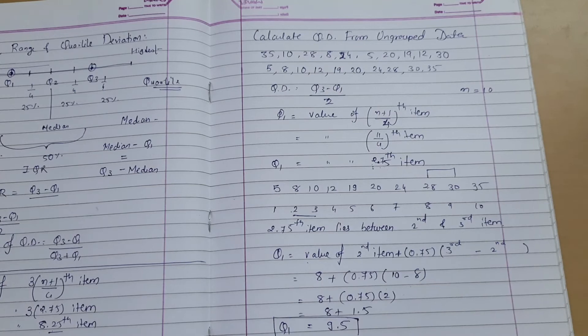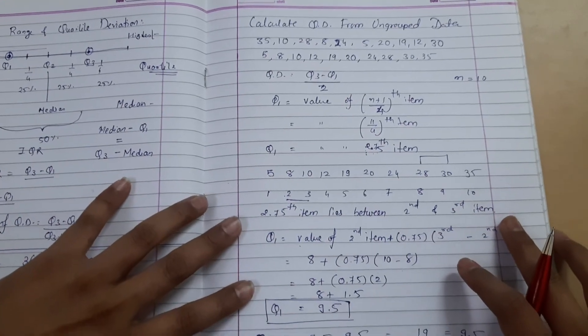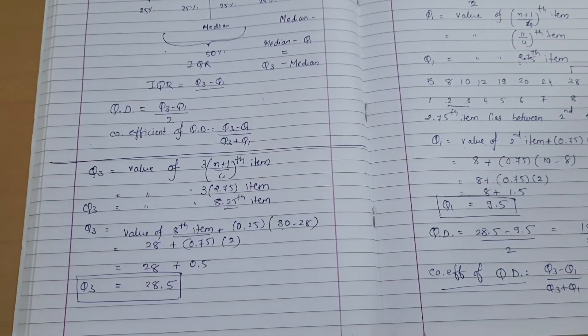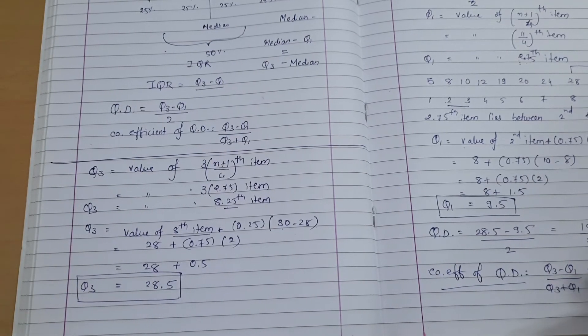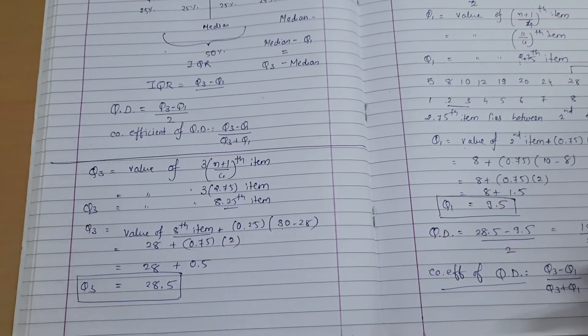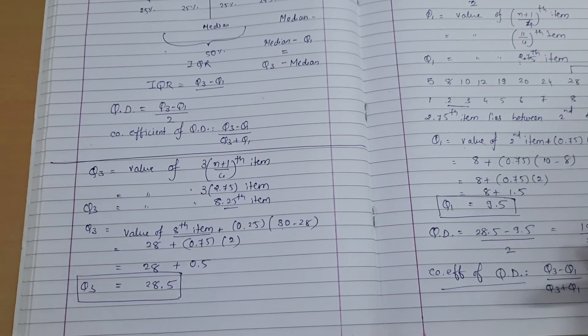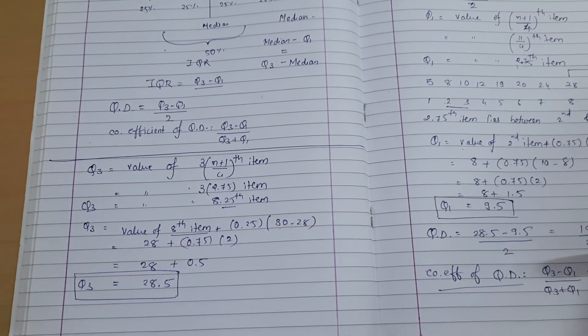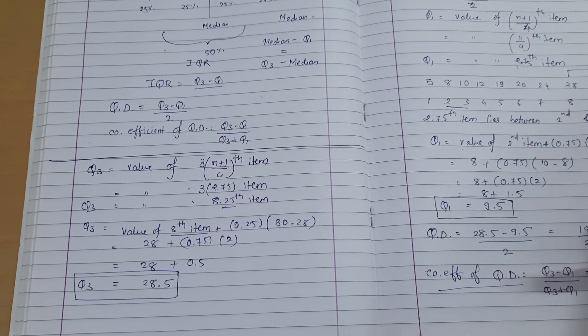This is how to calculate quartile deviation and coefficient of quartile deviation for ungrouped data. I know the process is somewhat lengthy, but we have to do it. Q1 is (n+1)/4th item and Q3 is 3(n+1)/4th item. When the item position is a fractional number, we find it between two numbers using interpolation. There are some examples where we directly get the position. We will do that later on. Thank you.